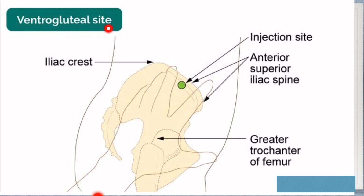Next is the ventrogluteal site — the front of the gluteal muscle. The patient should be in a side-lying position. Palpate the iliac crest using the middle finger and the anterior superior iliac spine using the index finger, with the palm over the greater trochanter. Then assume a triangular area between these two fingers — between them will be the site of injection. If the patient is in left lateral position, use the right hand; if in right lateral position, use the left hand to find the spot.